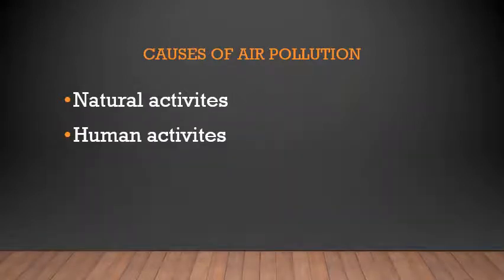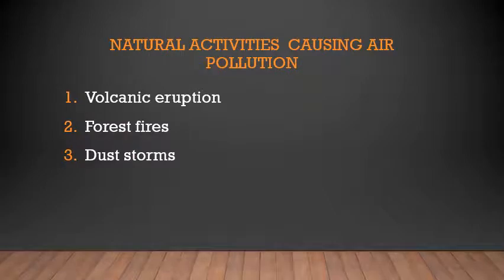We are going to learn about different causes of air pollution. To learn it easily, we are going to differentiate the causes of air pollution into natural activities and human activities — how the air is getting polluted by natural activities and how it is getting polluted by human activities. First, we are going to see the natural activities causing air pollution: volcanic eruption, forest fires, and dust storms. These are the natural activities causing air pollution.